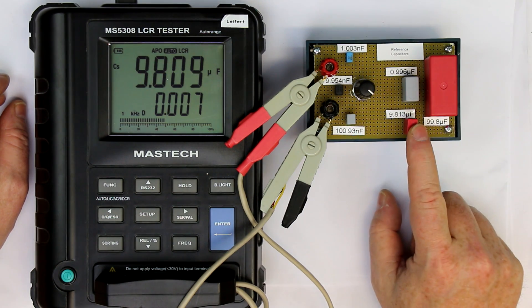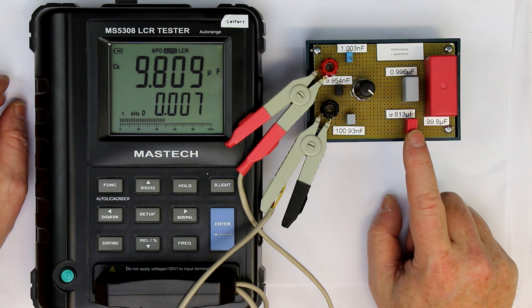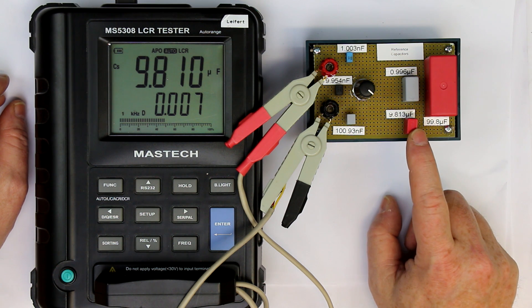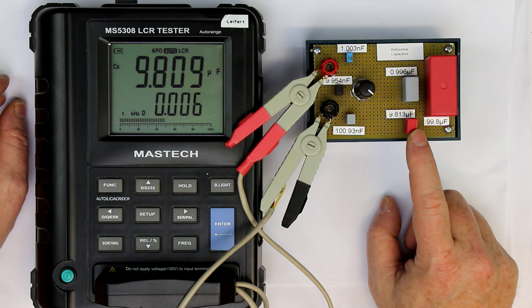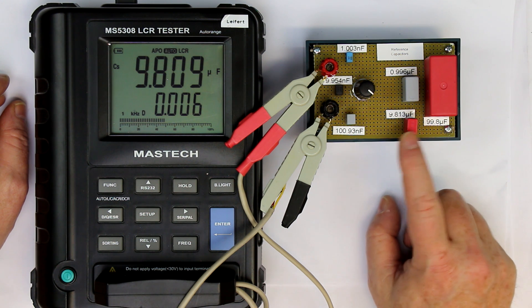And now comes the 10 microfarad, which comes only with 5% accuracy as bought. And you can see it's 2% off. So by having the measured value here, we know now the more or less to half a percent exact value.